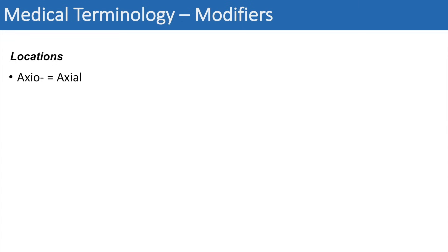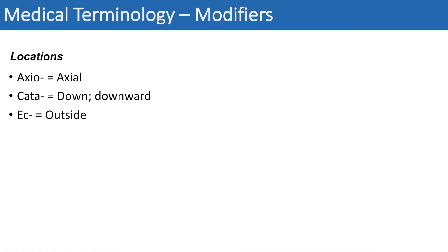The first one is axio, which means axial — you can think of the axial skeleton in this case. The next one is cata, which means down or downward. The next prefix is ek, and you can think of outside, so think of ectopic.